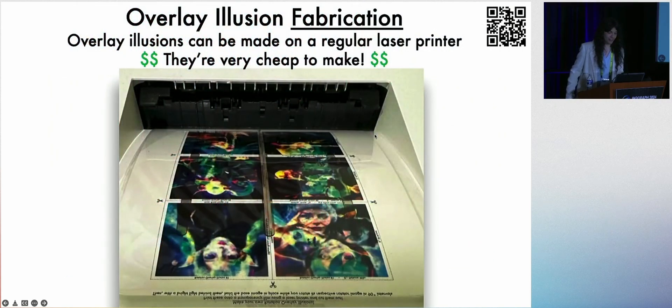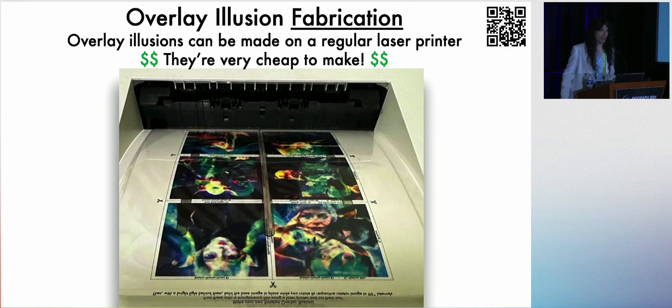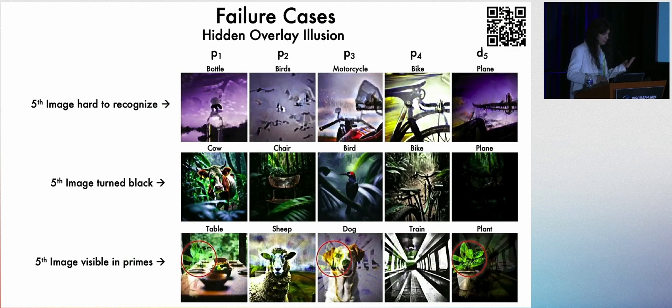Creating overlay illusions is actually very cheap. All you need is a laser printer and a hunk of plastic, which you can buy a pack of 100 on Amazon. If you remember those old overlay projectors, that overhead projectors you might have seen in middle school. They still sell those.